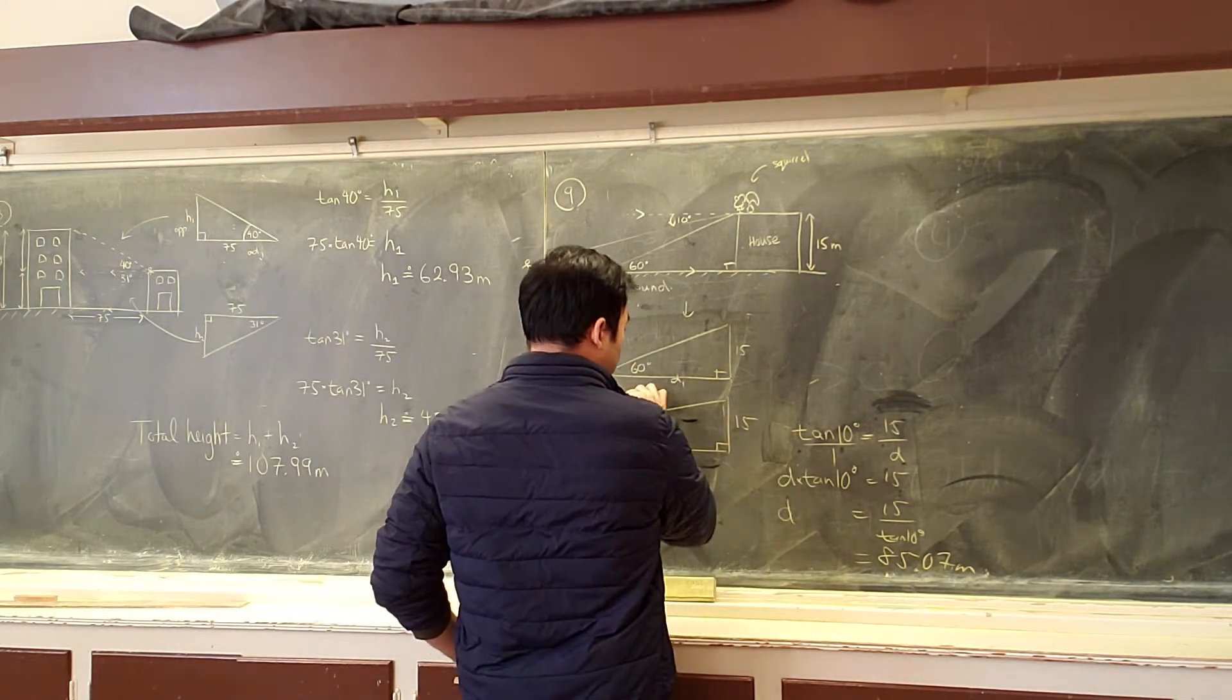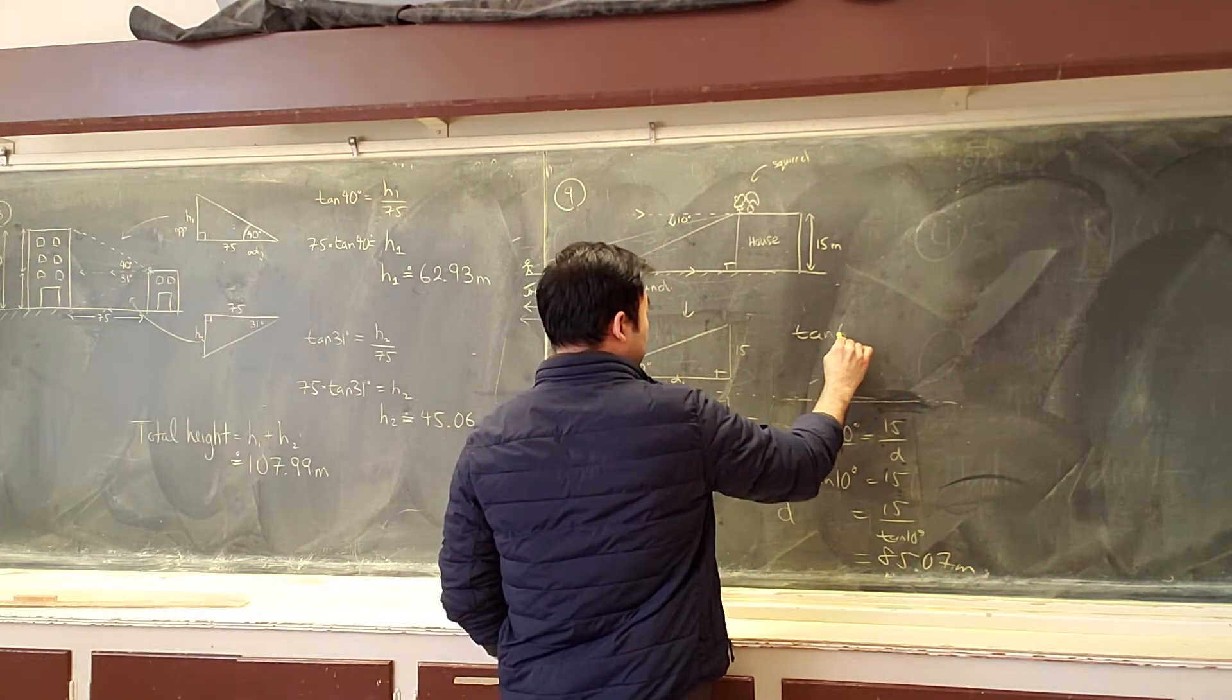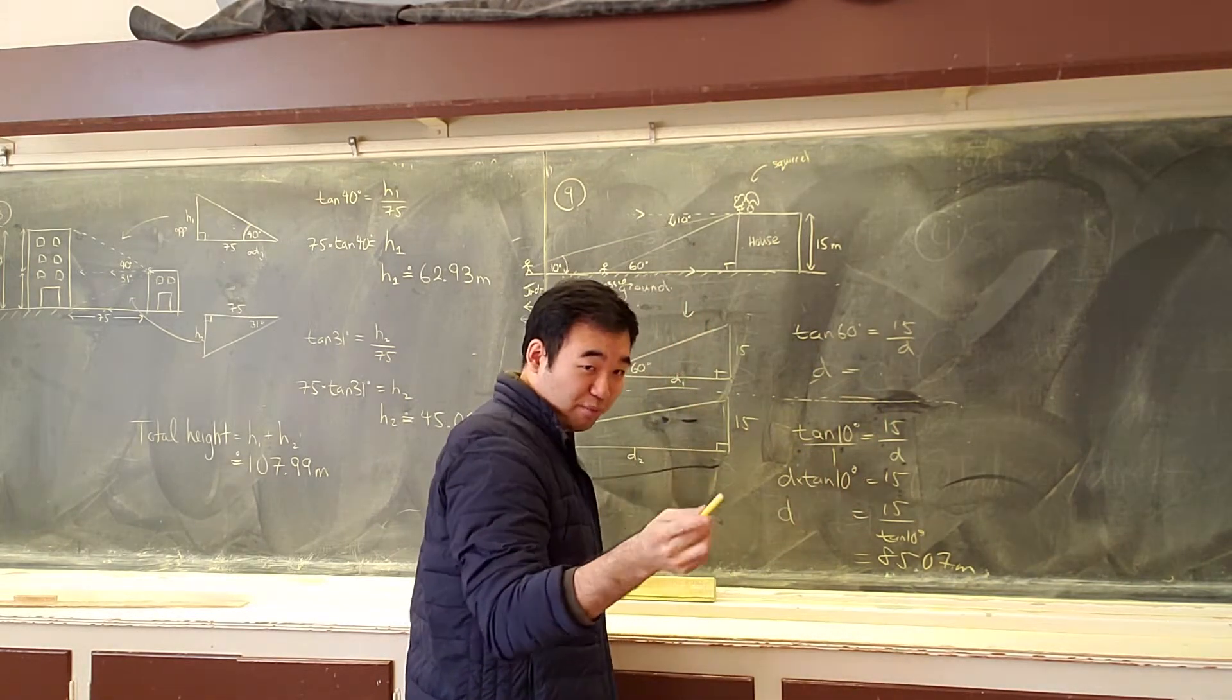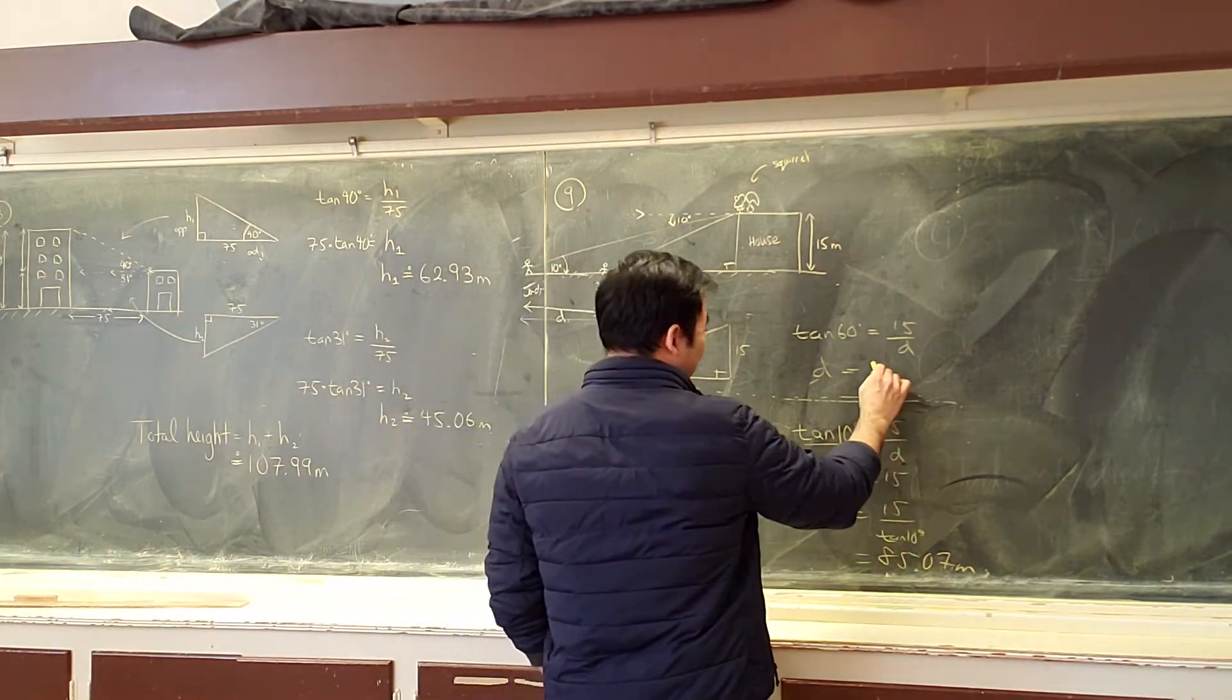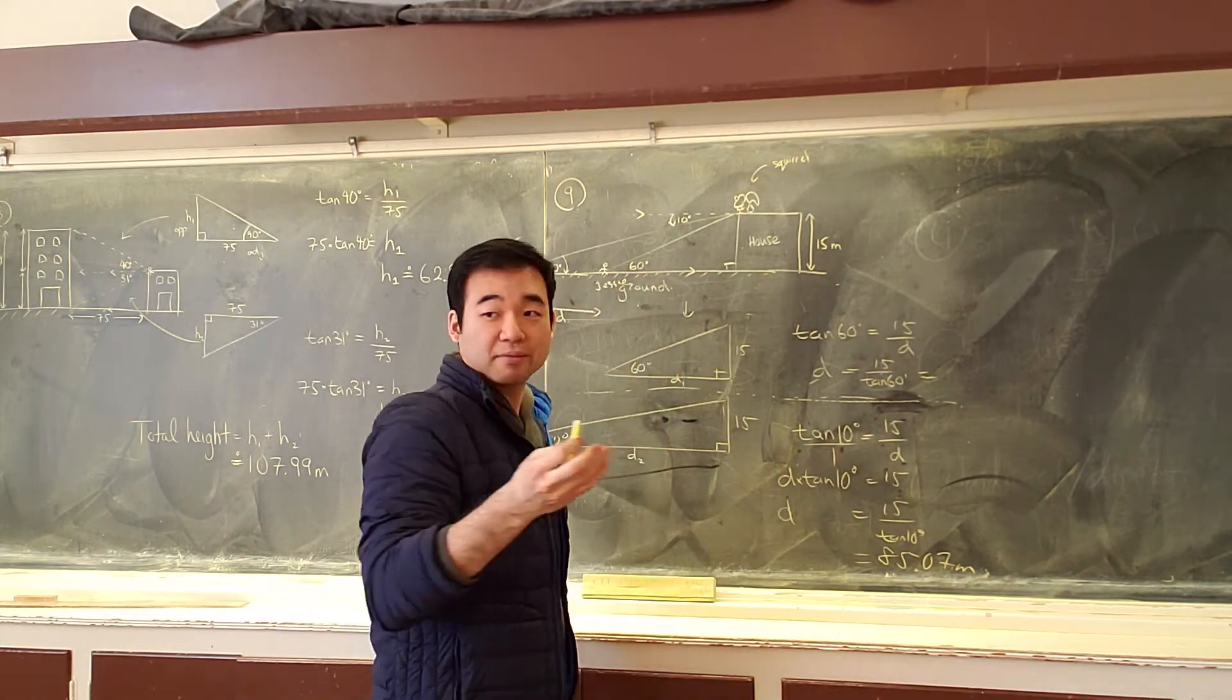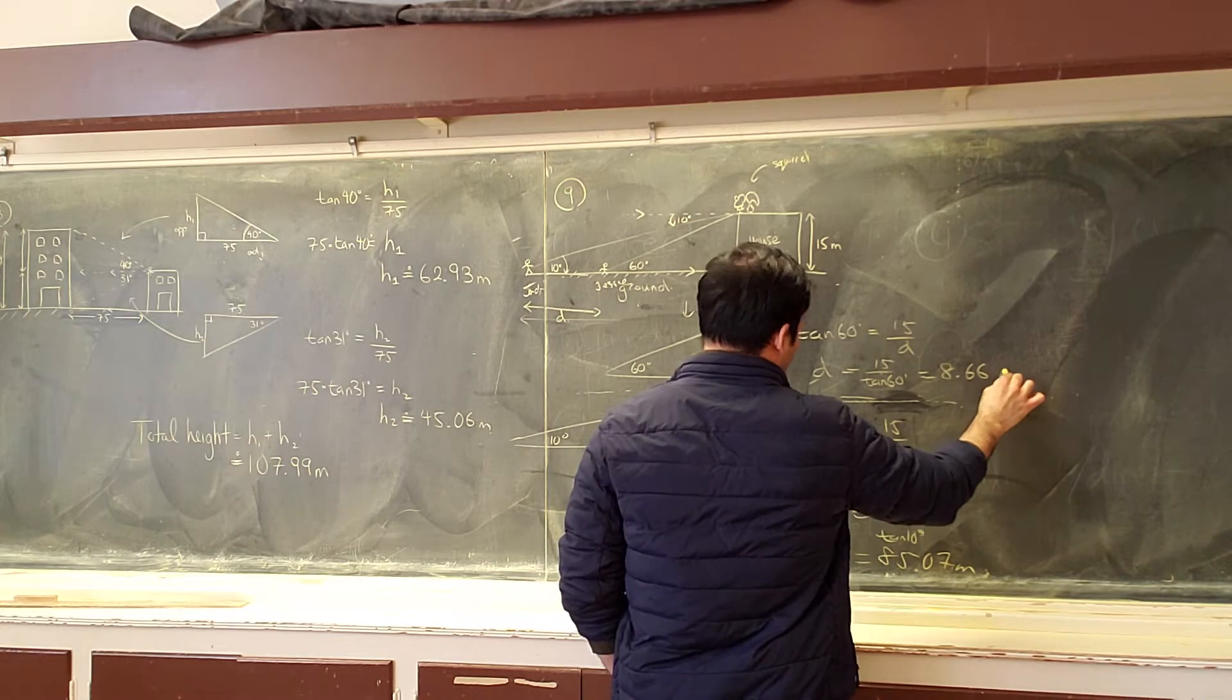We have tan 60 degrees equals 15 over D. In the same way, multiply both sides by D or cross multiply. It's the same idea. Just make sure we know where that's coming from. And we have 8.66 meters.